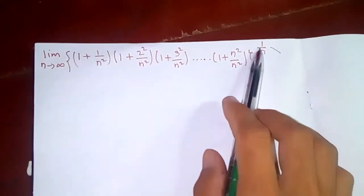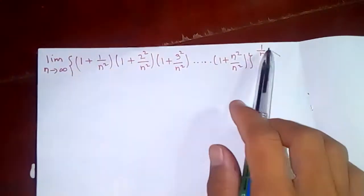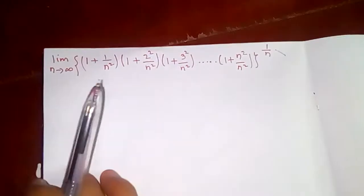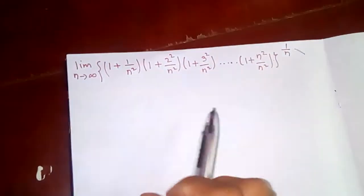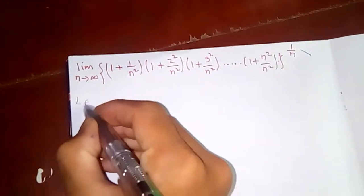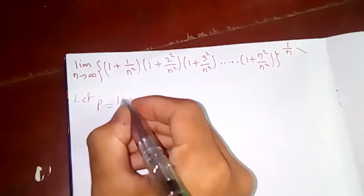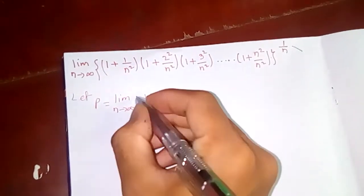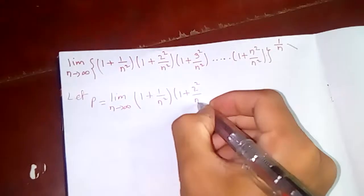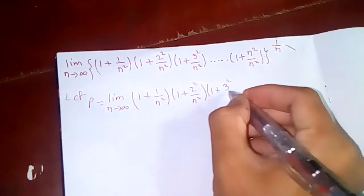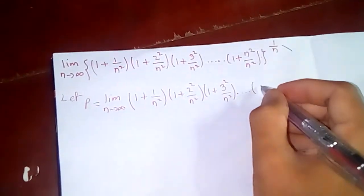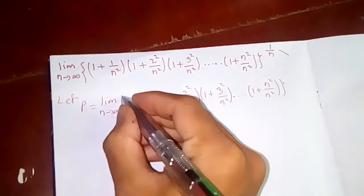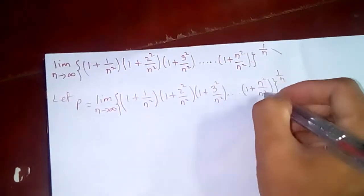Since we have the expression raised to the power one over n, I want to take log. So let p be equal to the limit as n tends to infinity of (1 + 1/n²)(1 + 2²/n²)(1 + 3²/n²) and so on, up to (1 + n²/n²), all to the power one over n.